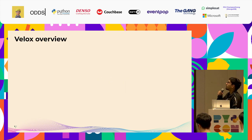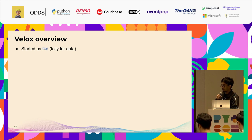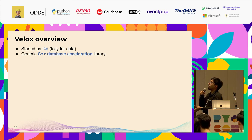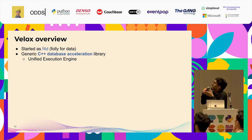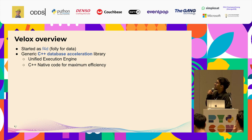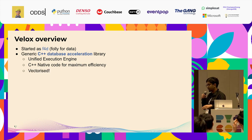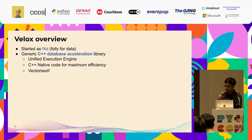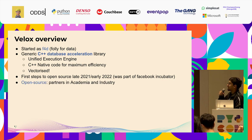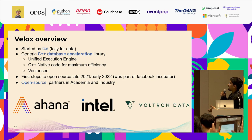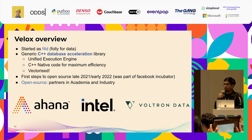Giving an overview of Velox: it started as Facebook's internal project called F4D. In its textbook definition, it's a generic C++ database acceleration library, but in practice it's a unified execution engine. It's written in C++ for maximum efficiency and was vectorized from scratch — all operations in Velox are in vectorized format. The first steps to open source were in late 2021, and by 2022 it was part of the Facebook incubator project. Now it has partners from academia and industry like Ahana, Intel, and Voltron Data contributing to the project.